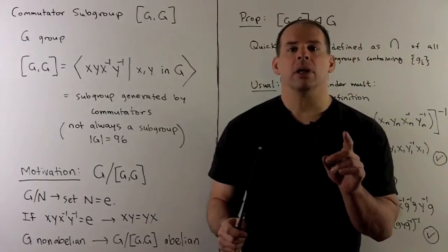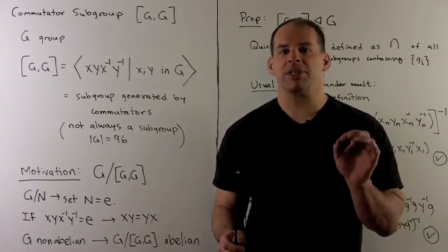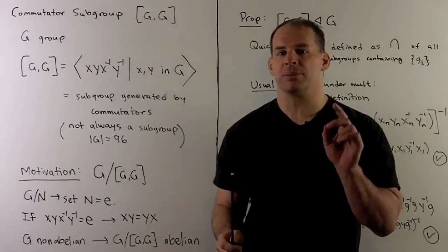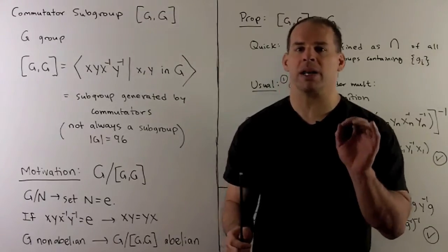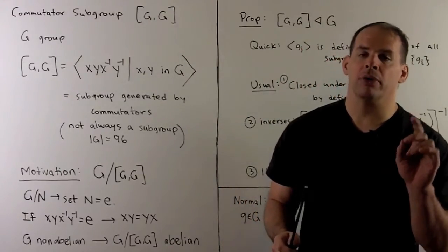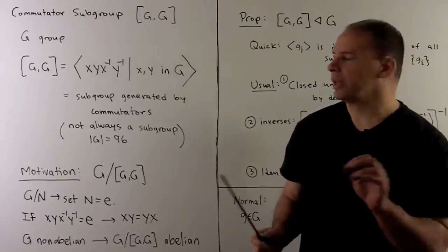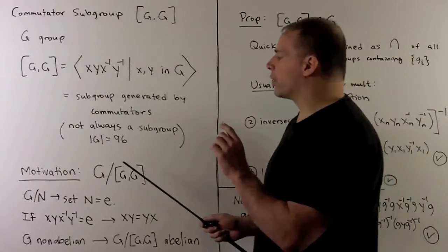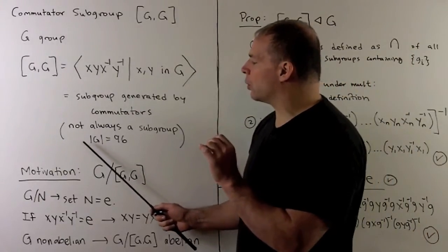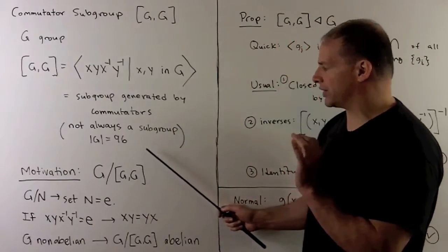We have to say 'subgroup generated by the commutators' because the set of commutators themselves might not be a subgroup. For us, that's not going to be a problem — this doesn't occur for finite groups until we get to order of our group equal to 96.